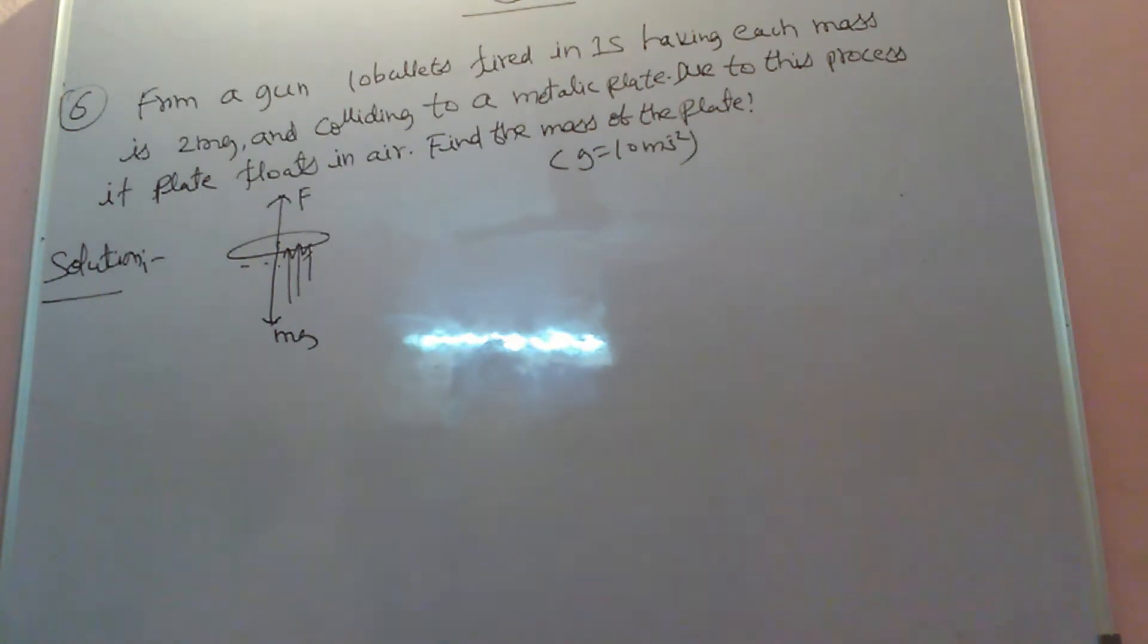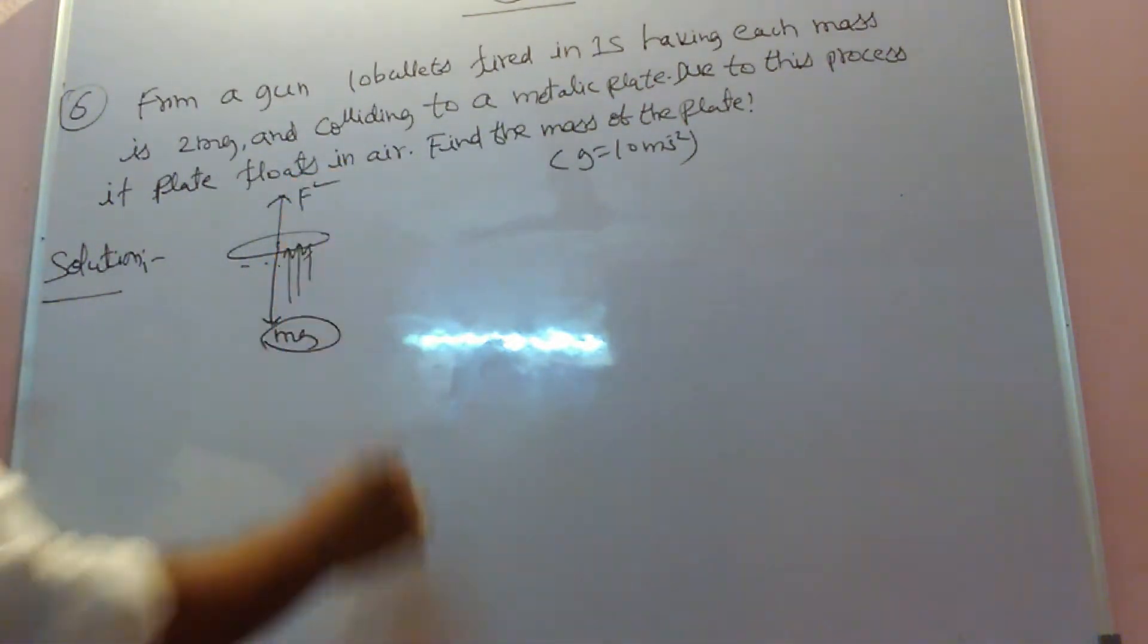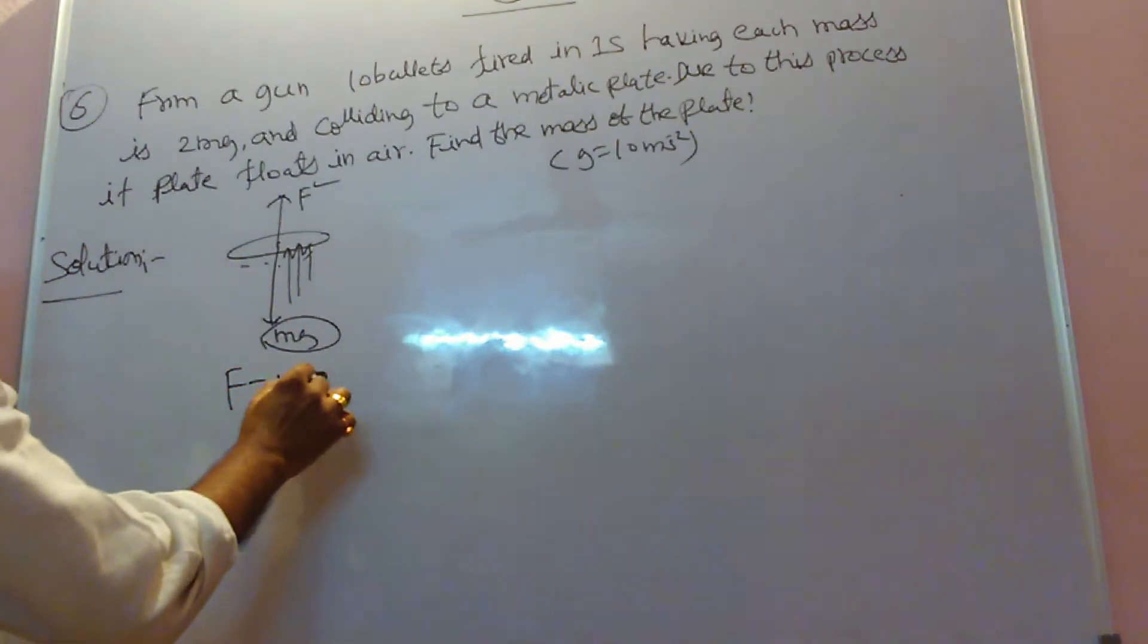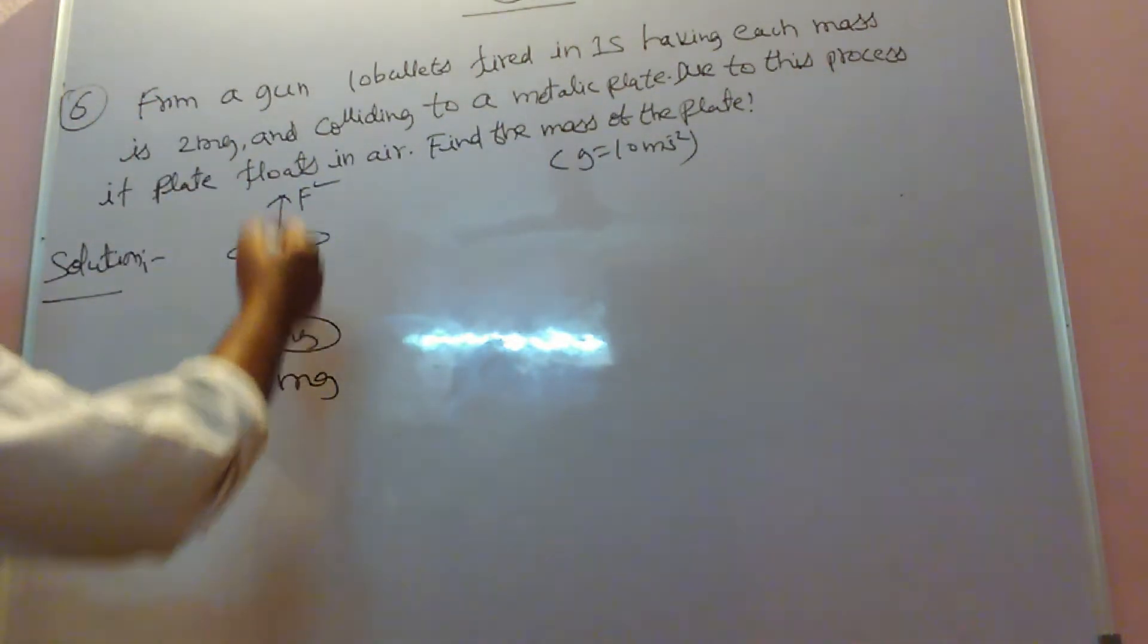For any body you take, its weight acts downward. This is gravitational pulling. When bullets are colliding with the plate, they exert some force. That force is balancing the mg weight. Then only it floats. If F is more, it goes upward. If mg is more, it falls downward. If both are equal, floating happens.